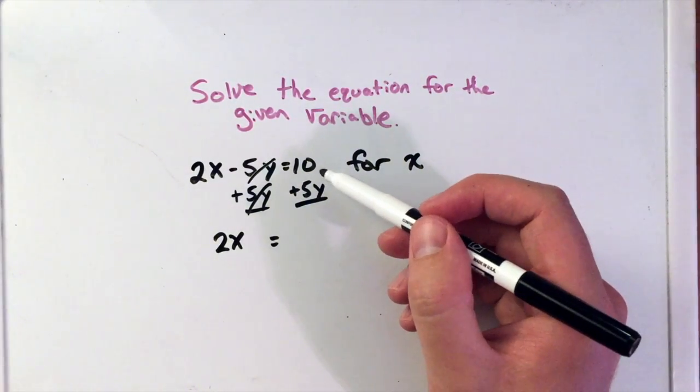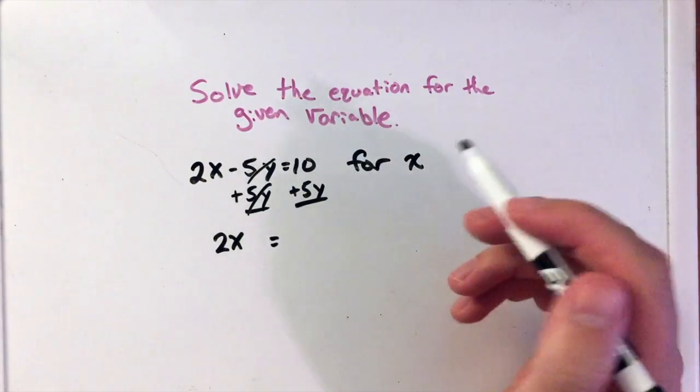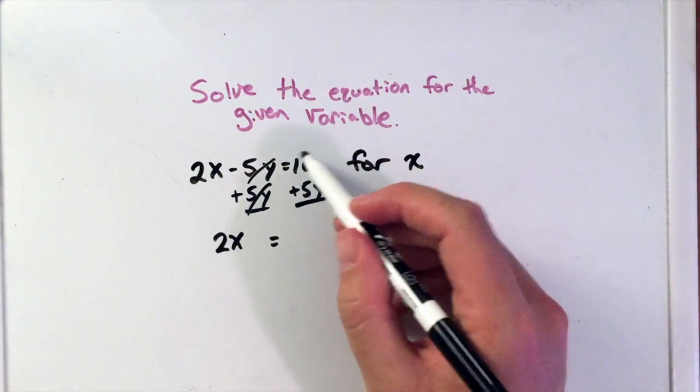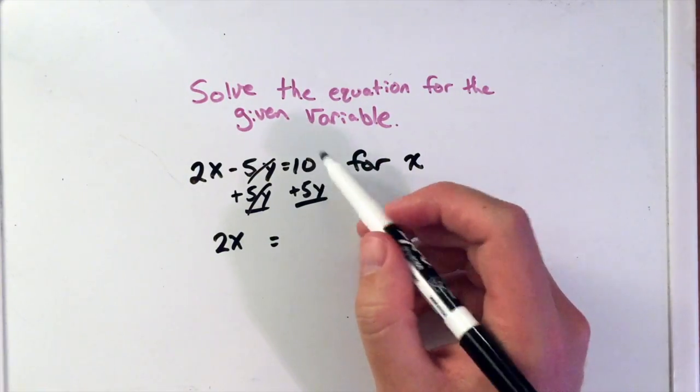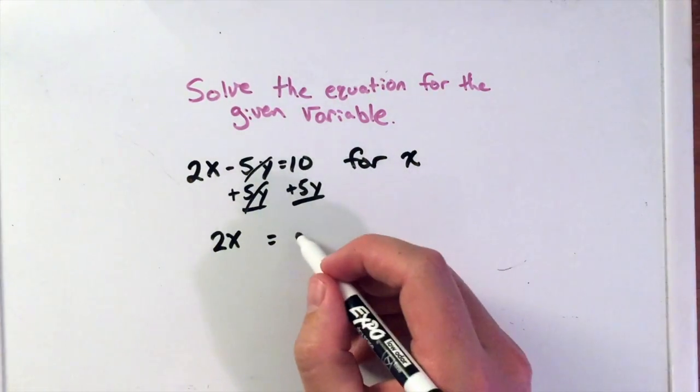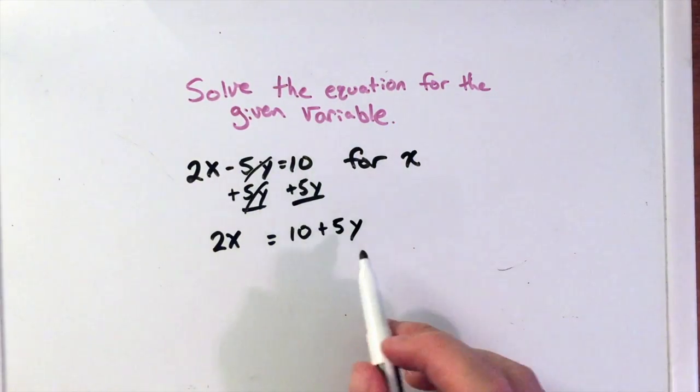Now, a common mistake students would want to do is take the 10 and add the 5 and say 15y. But that would be incorrect because these are not like terms. This has a y next to it. There's five different y's here, and then 10 is a number by itself. So we're left with 10 plus 5y, and you can write 5y plus 10. It really doesn't matter the order there.